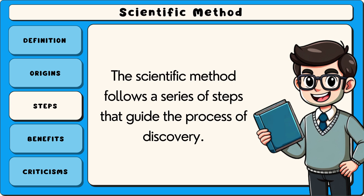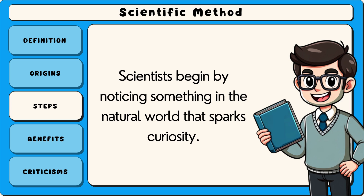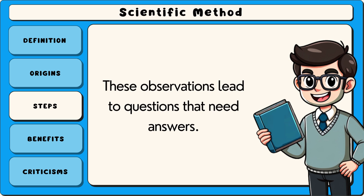The scientific method follows a series of steps that guide the process of discovery. The first step is making observations — scientists begin by noticing something in the natural world that sparks curiosity. For example, a biologist might observe that certain plants grow better in sunlight than in shade and wonder why this happens. These observations lead to questions that need answers.